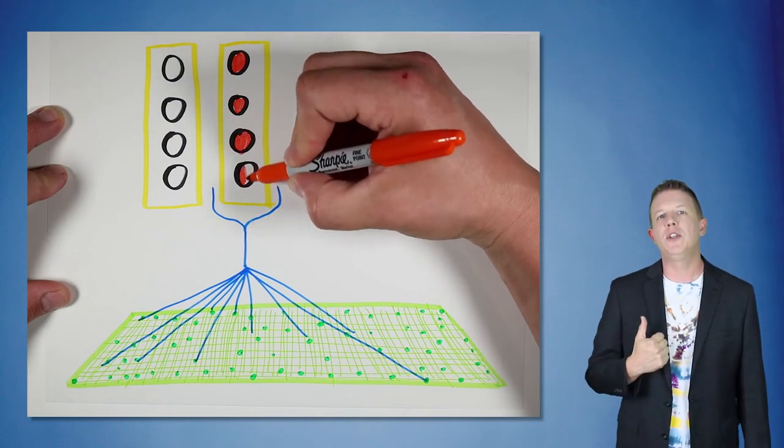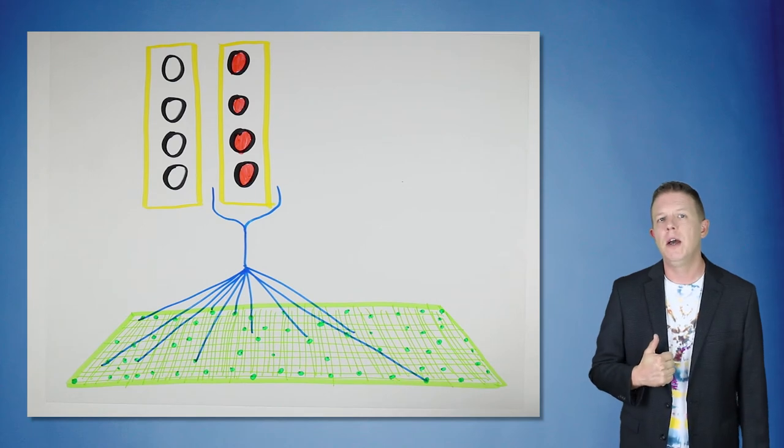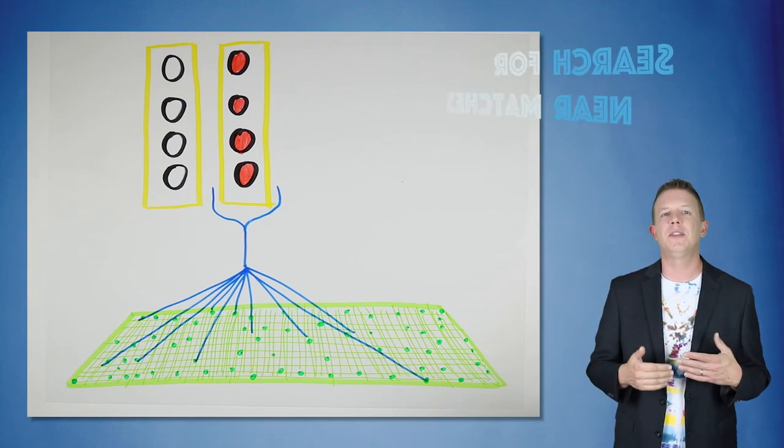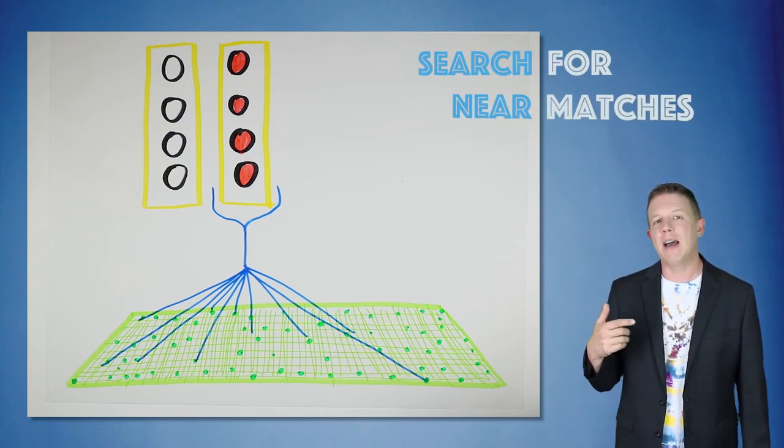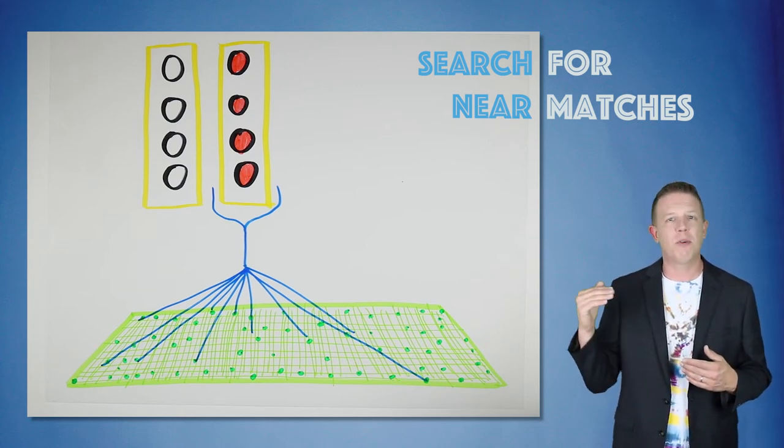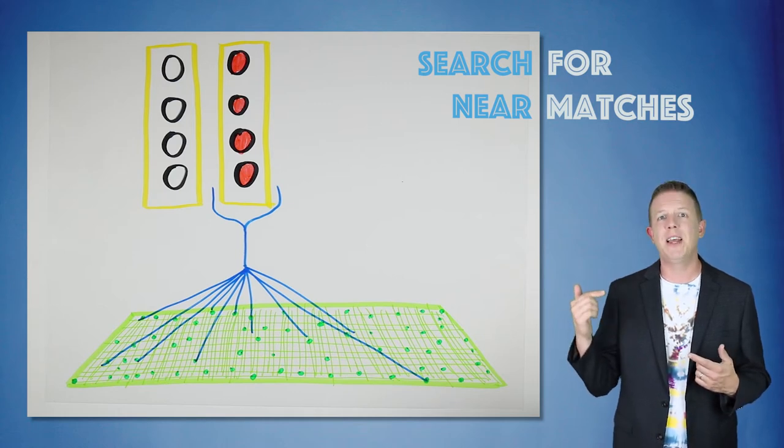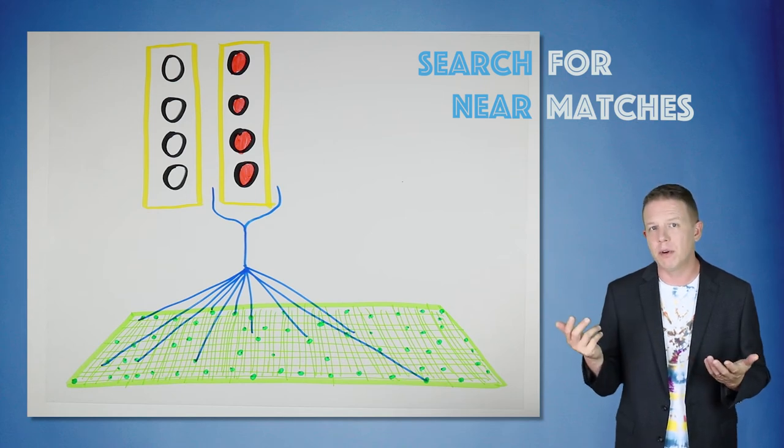Now let's talk about how we choose a winner cell to represent this new transition in our sequence. First, we will look through these potential winners in the column to see if any of them almost predicted the last input. This means that they have distal segments that match the previously active cells, but their permanence values are not high enough to form a connection. If they had been connected, the cell would have been in a predictive state, and the column would not have burst.